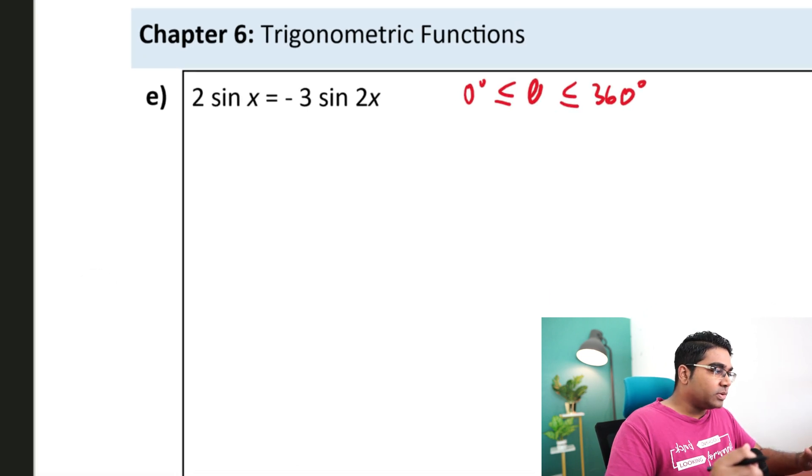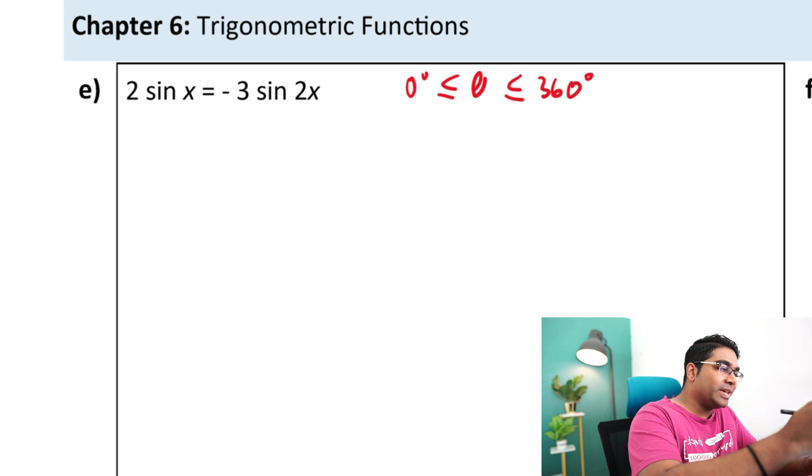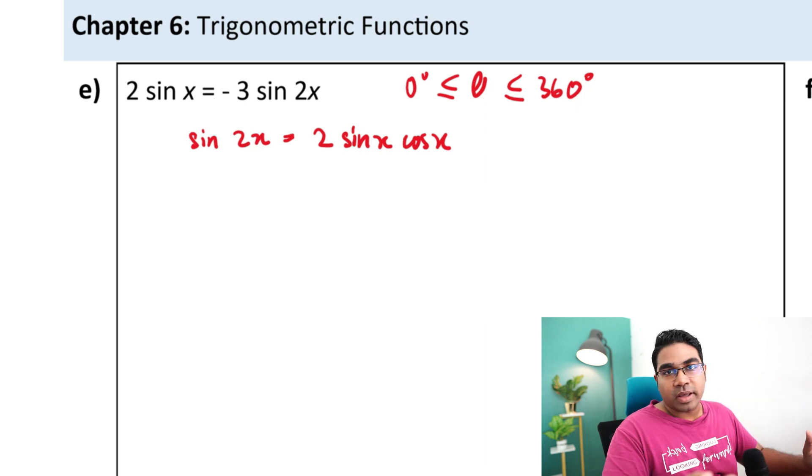So let's get to the question. 2 sine x is equals to negative 3 sine 2x. The first thing to do here will be to change 3 sine 2x using our double angle formula. So the double angle formula will be sine of 2x is equals to 2 sine x cosine x. This is the double angle formula.